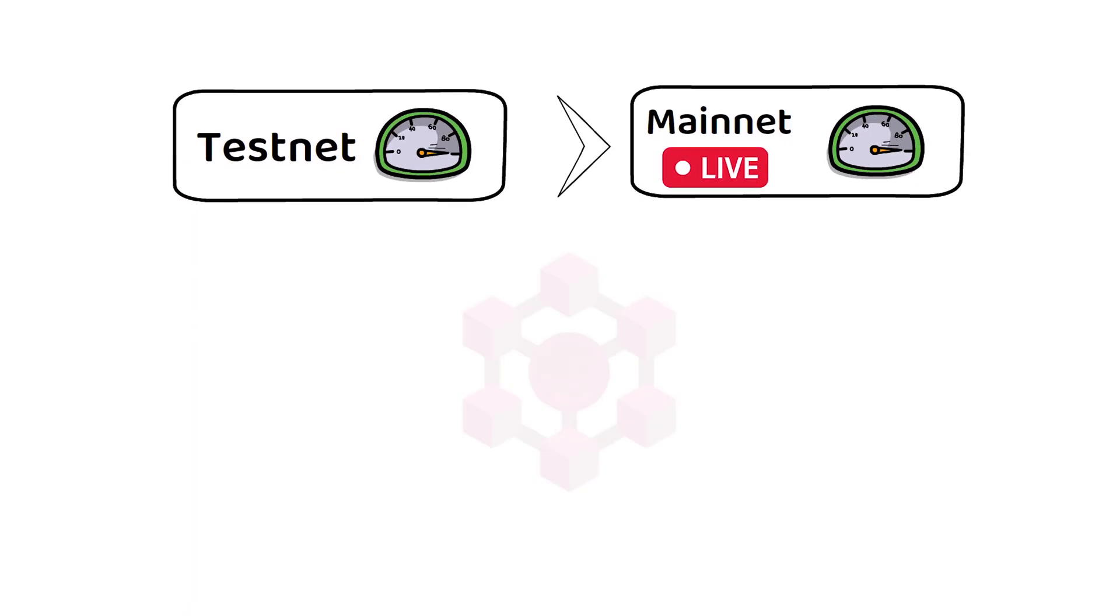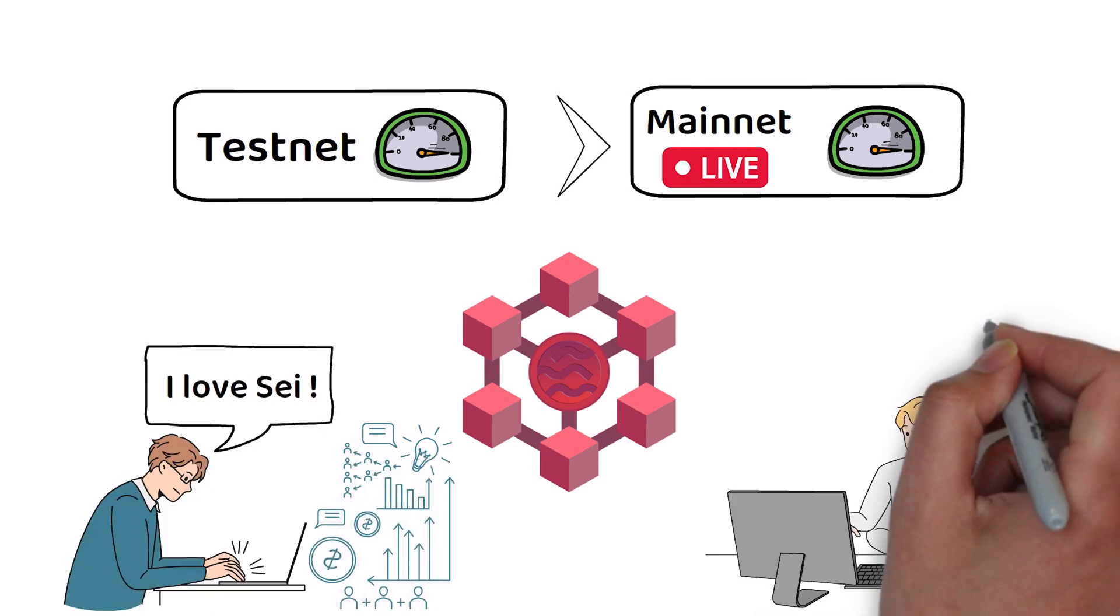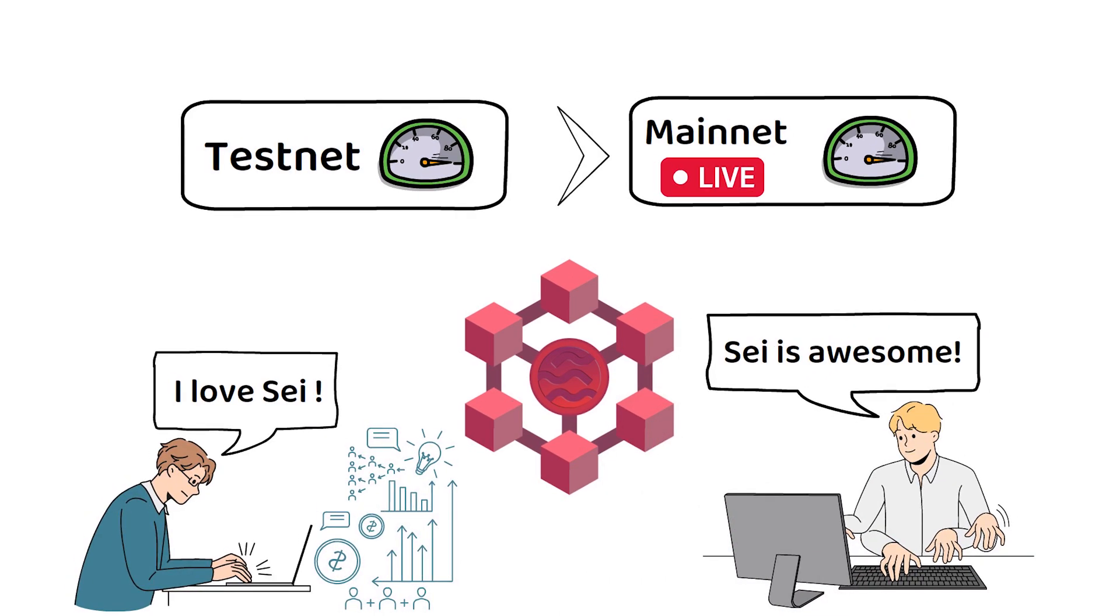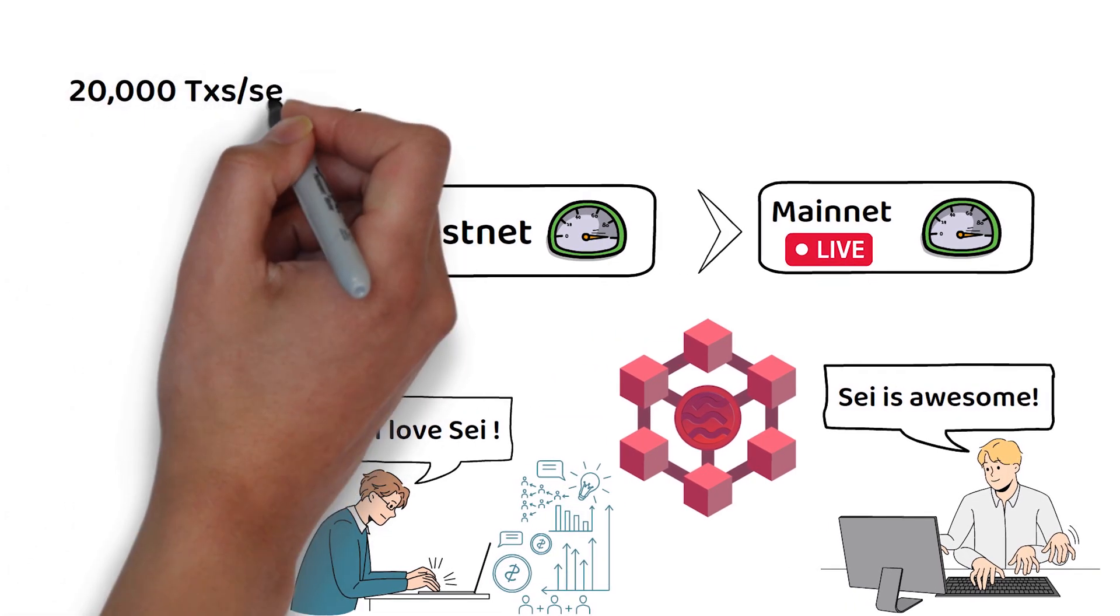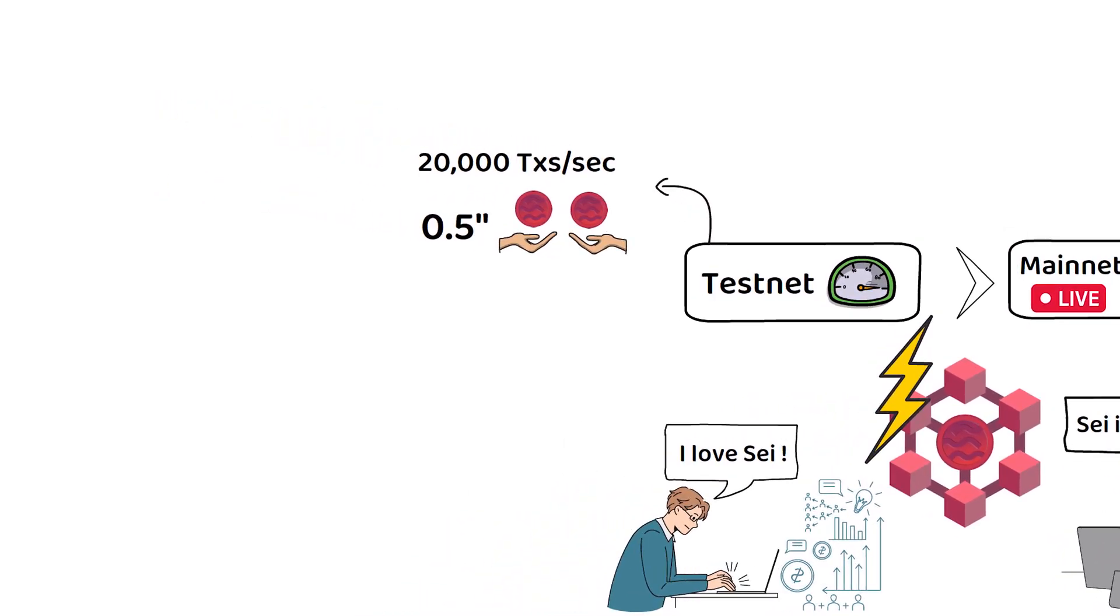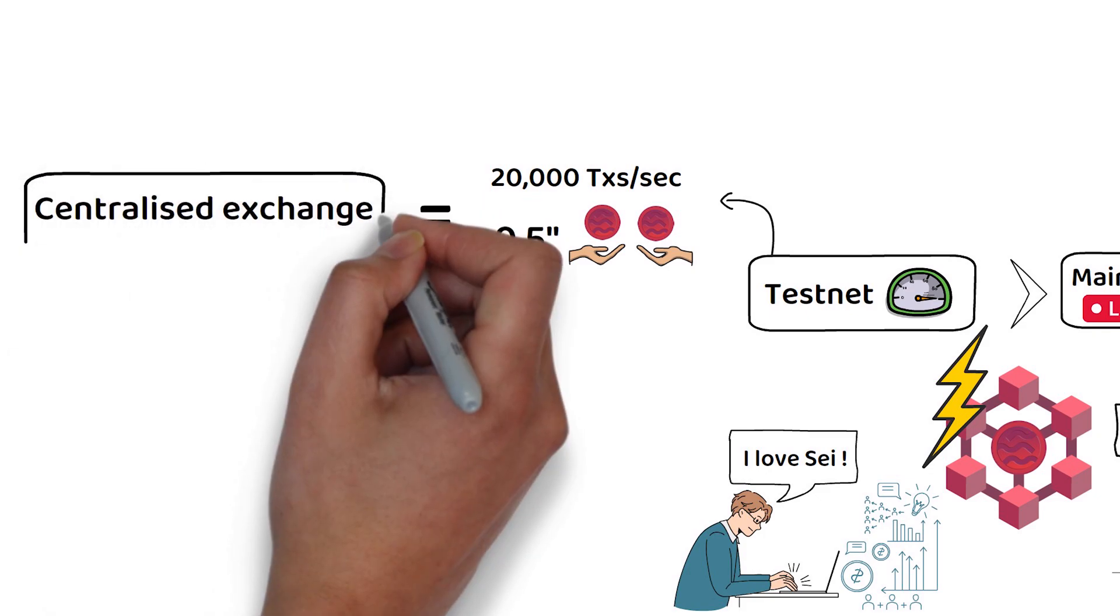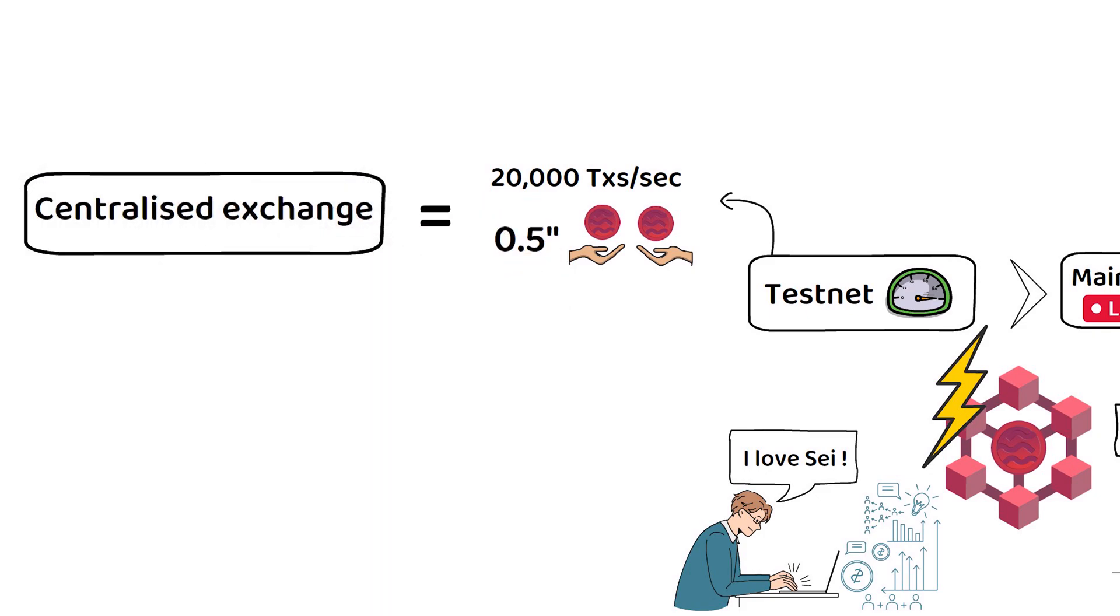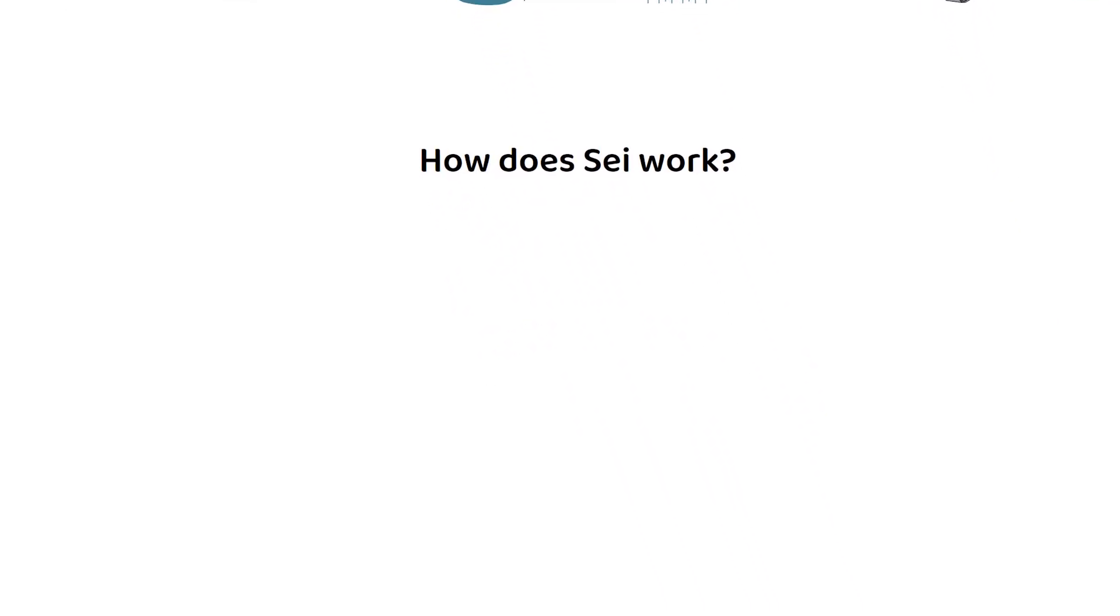On their testnet, SAI can support up to 20,000 orders a second with only half a second needed for transaction completion, making it a very fast blockchain indeed. For comparison, this is roughly the same speed as most centralized exchanges, making it potentially faster than all other decentralized exchanges on the market. But how does SAI work exactly?